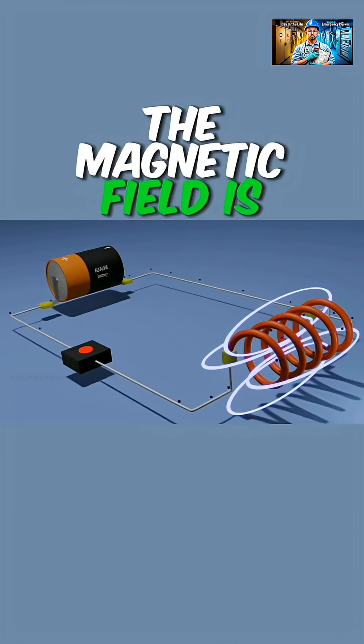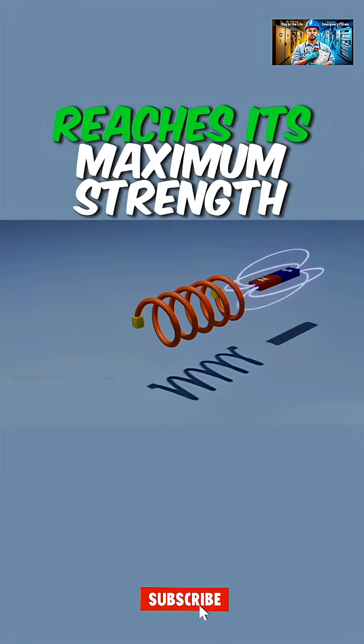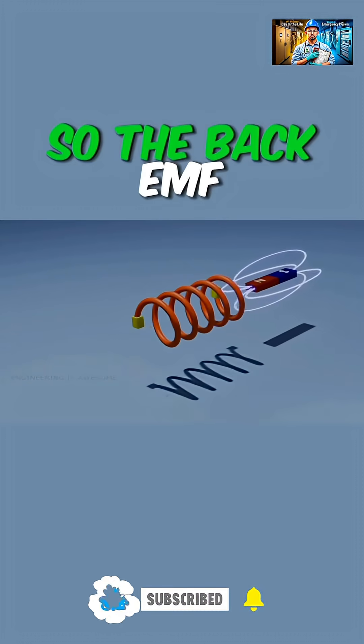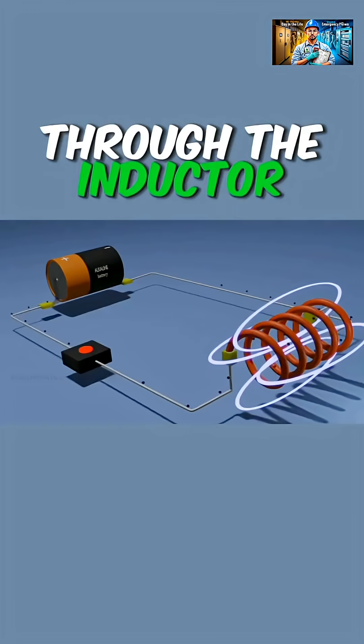In the circuit, the magnetic field is created by the current flowing through the inductor. When the magnetic field reaches its maximum strength, it can no longer expand. So the back EMF, which was opposing the current flow, disappears and allows the current flow through the inductor.